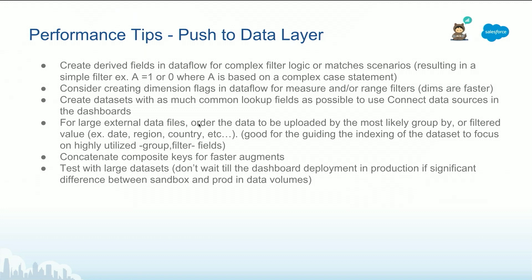If you are uploading large external data files, you want to group the data first by the most likely values — for example, start with columns like region, country, date, etc. Try to avoid composite keys or compound keys in the recipes or augments, as these are heavy. Instead, concatenate composite keys into new fields, combine them into a single new field, and then use that field for augmenting, connecting, or matching data. Test with large data sets — if you have big volumes, do not wait until you push to production to test the performance.